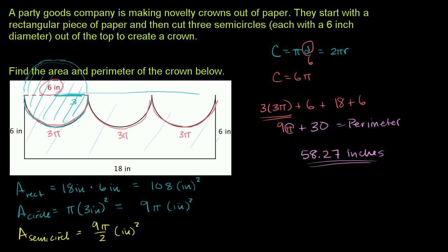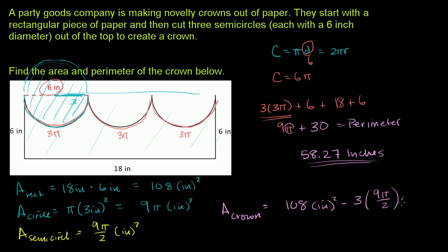We have 3 of these semicircles. So the area of the crown is going to be equal to the area of the rectangle — 108 square inches — minus 3 times the area of each semicircle, minus 3 times 9 pi over 2 square inches. This equals 108 minus 27 pi over 2 square inches.